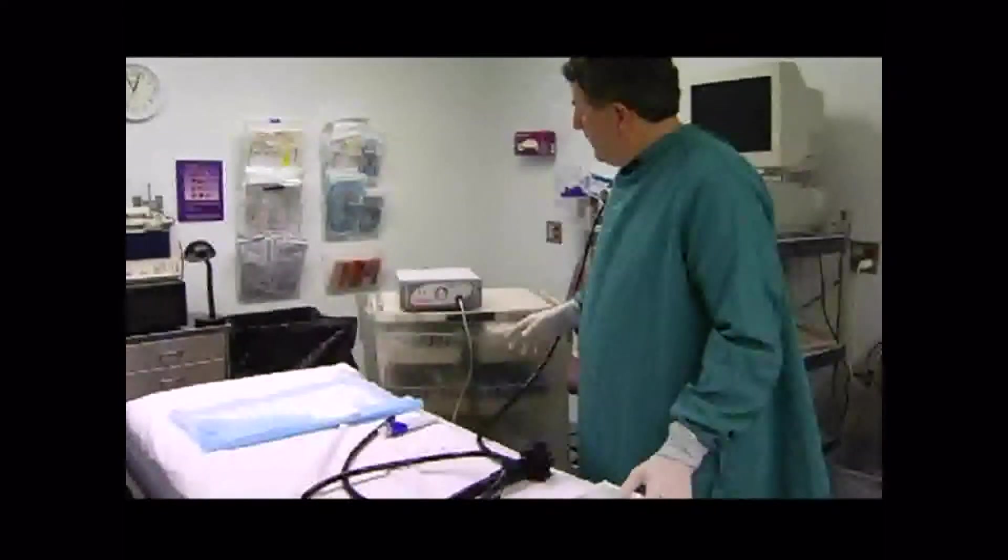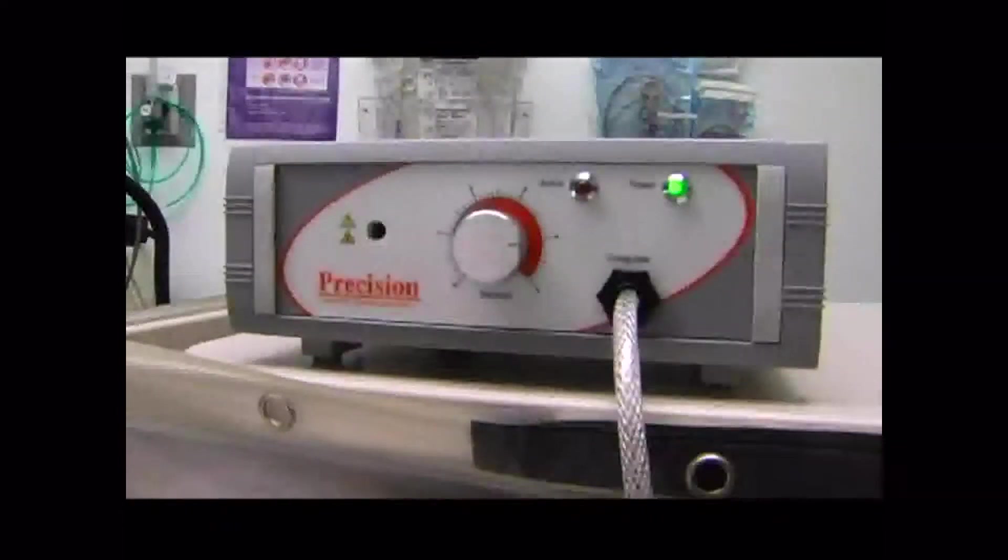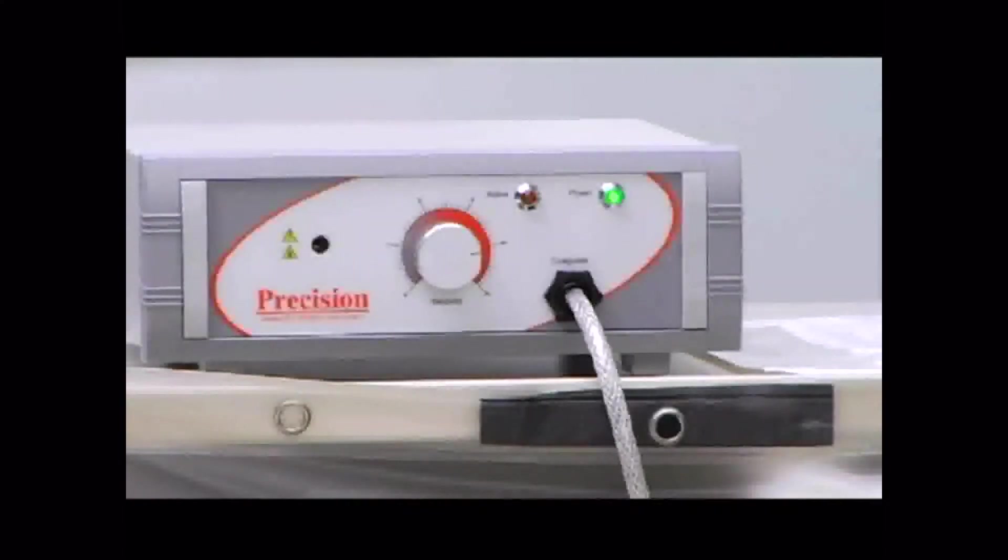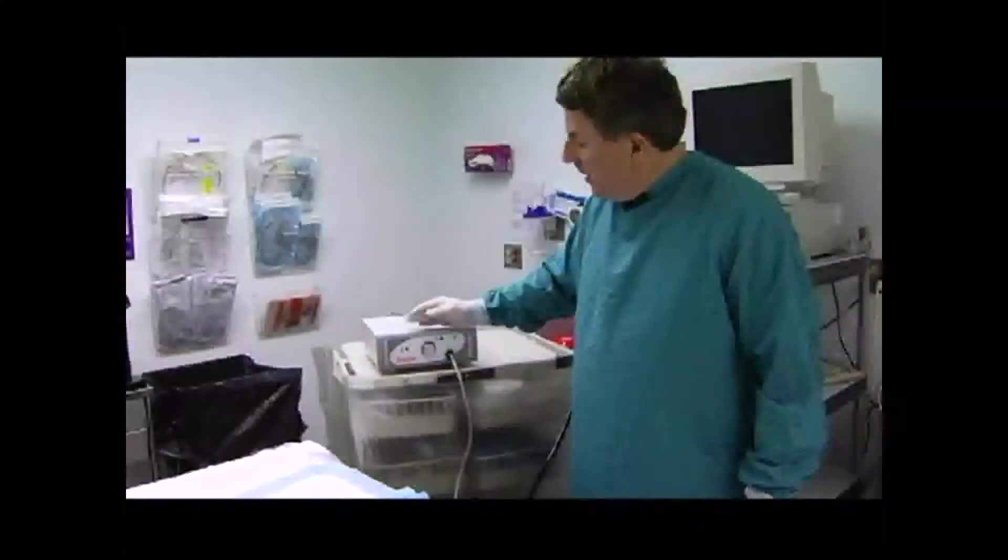We have an example of the machine here with the foot pedal to activate it. There's a simple knob here that allows you to set the time for the machine. For our purposes, we've been using it generally at the maximal setting. The machine will shut off independently on its own when that pulse is finished.